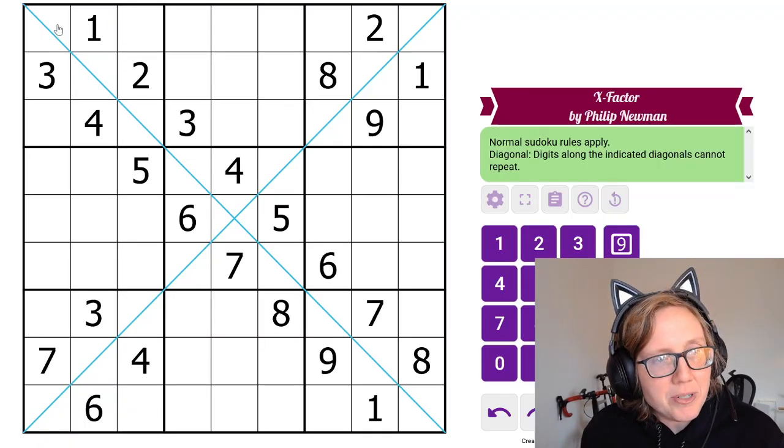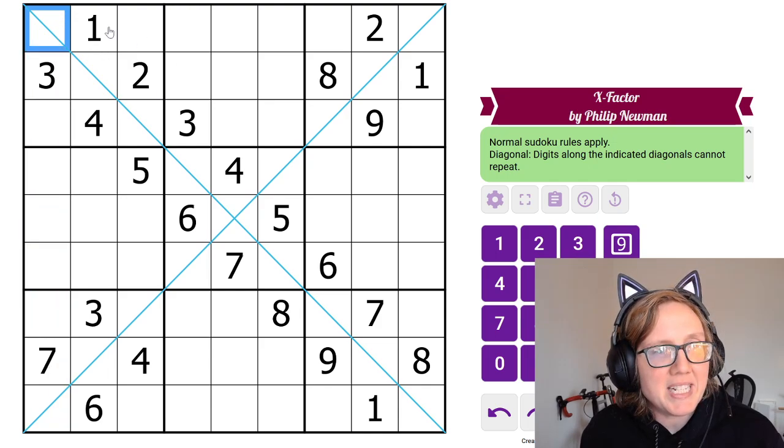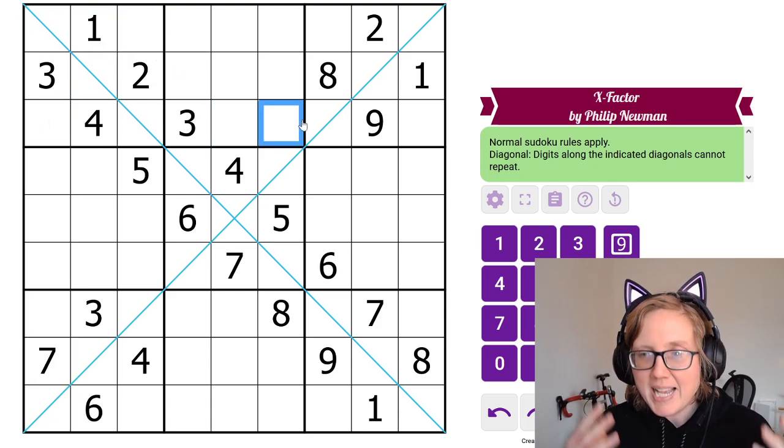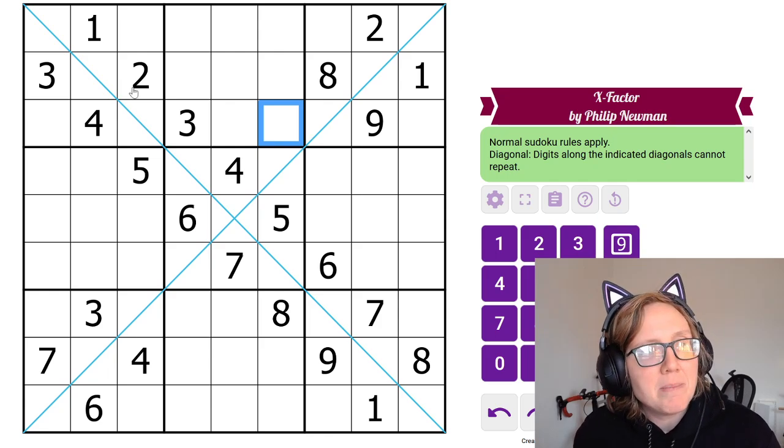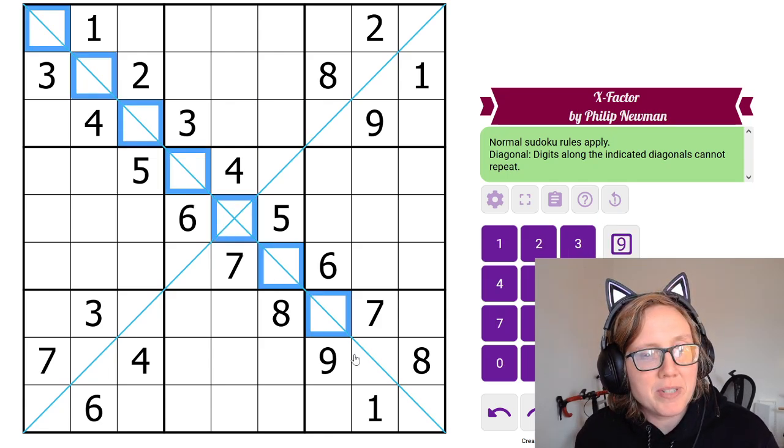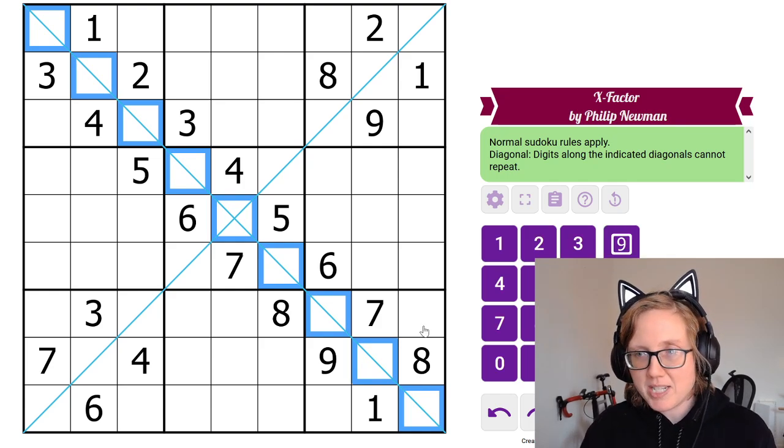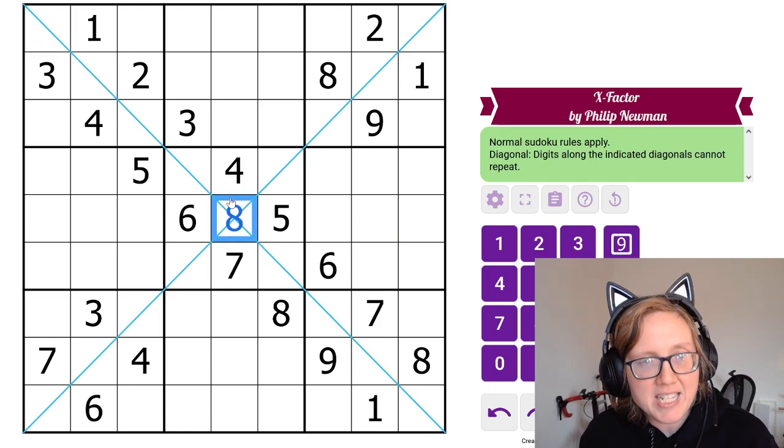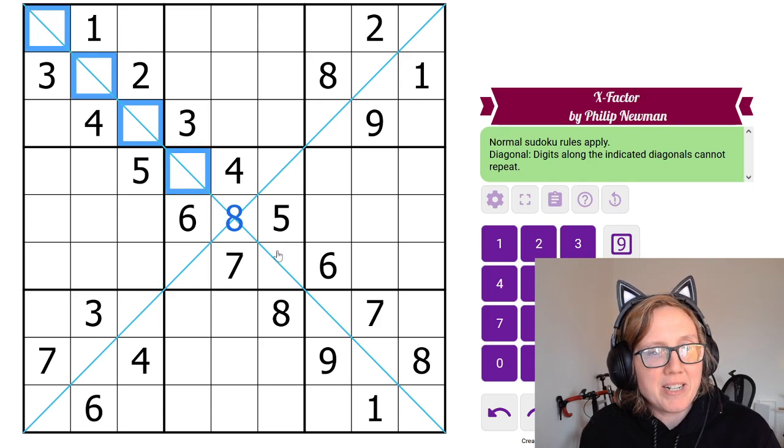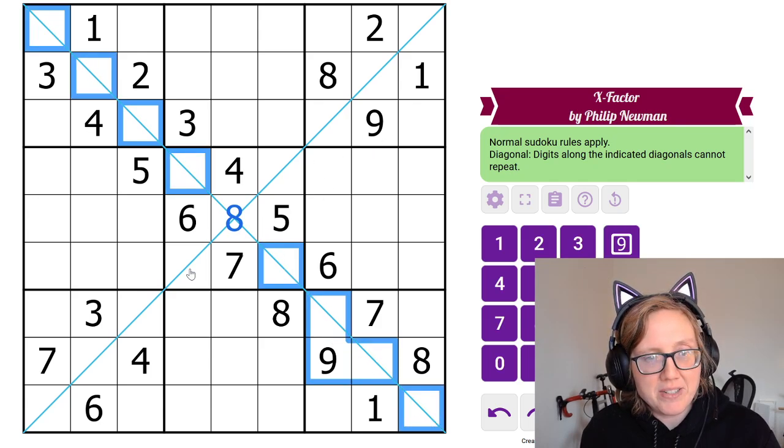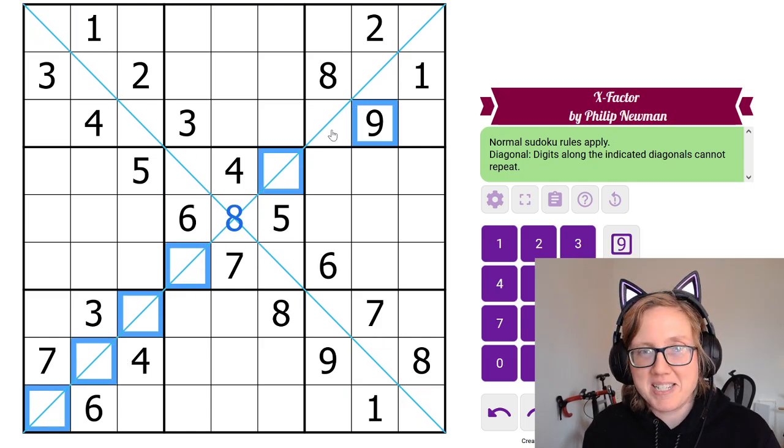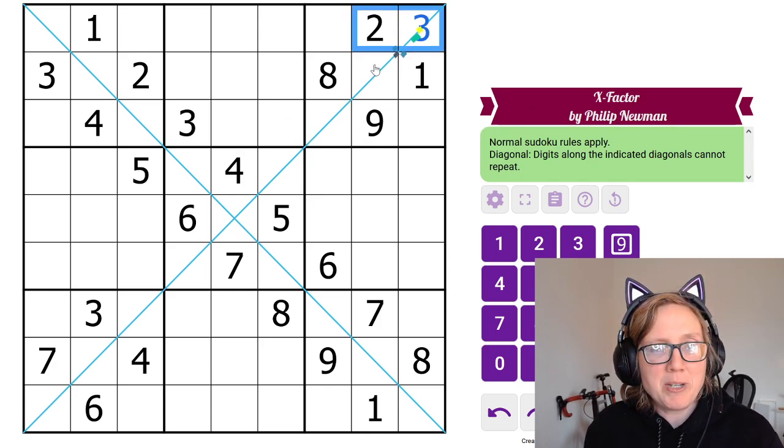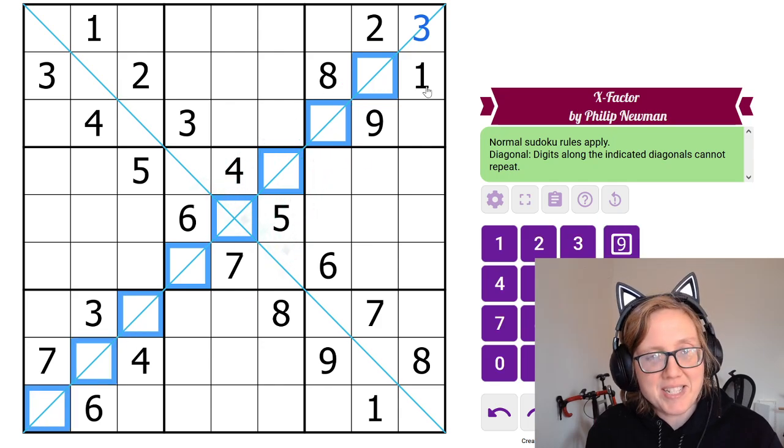So this is a Sudoku, so we have to place each digit one through nine in each row, each column, and each three by three marked region exactly once each. The variant is diagonal, meaning that along each of these marked blue diagonals, digits also can't repeat. So we just have an additional restriction beyond the classic Sudoku rules. For instance, if we were to put an eight here, we couldn't put an eight anywhere else on this diagonal. We'd rule eight out of those cells, and we would rule eight out of all of these cells because that eight would actually be on both diagonals. If we were to place a three here, we couldn't put three anywhere else on this diagonal.